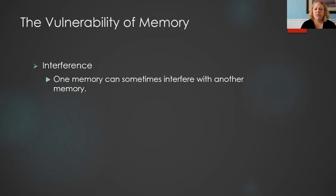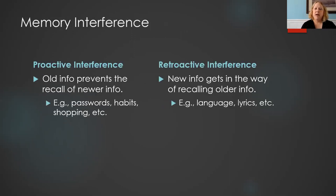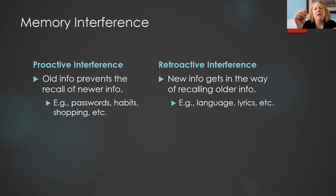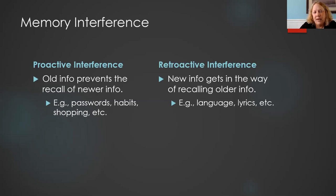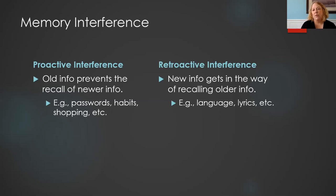Let's talk about the vulnerability of memory. Interference is when one memory starts to interfere with another — proactive or retroactive. Proactive interference is when old information prevents us from recalling new information. For example, all the passwords you have — when you have to change your password to get into Avala, the next time you log in you might automatically type in the old password instead of remembering the new one. That's proactive interference.